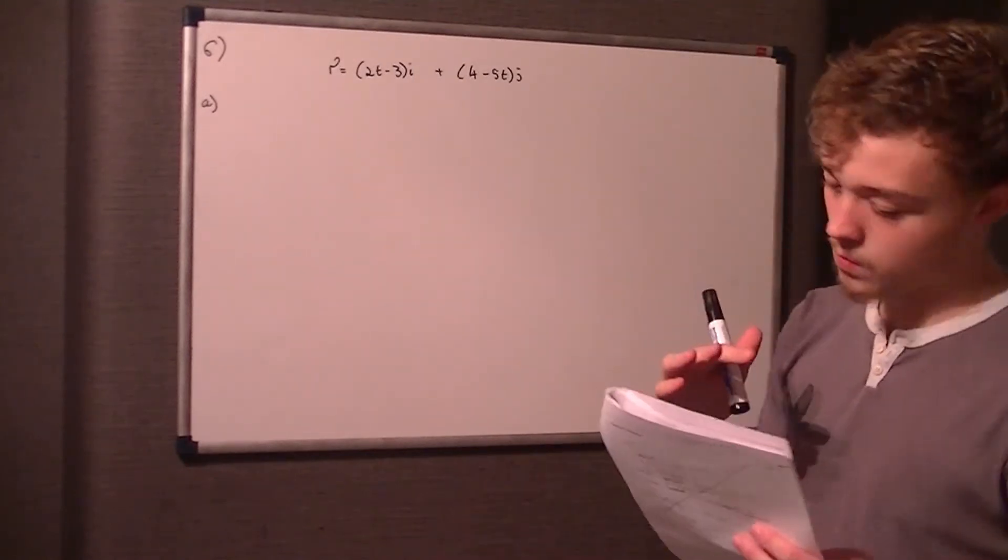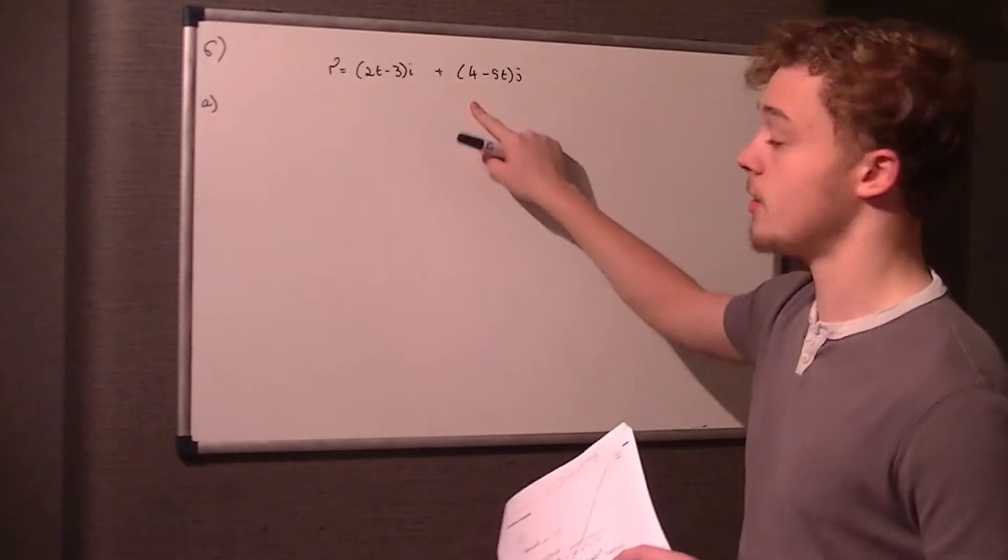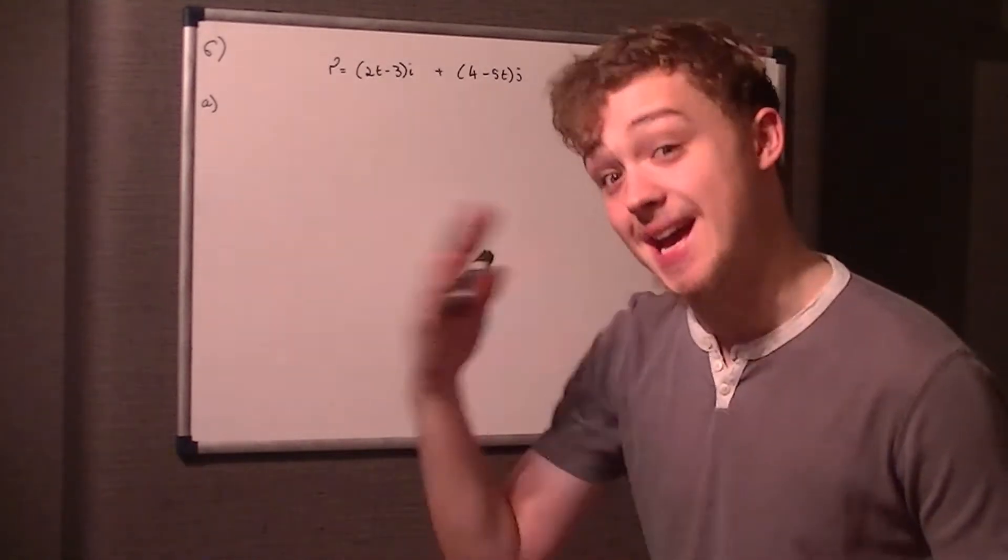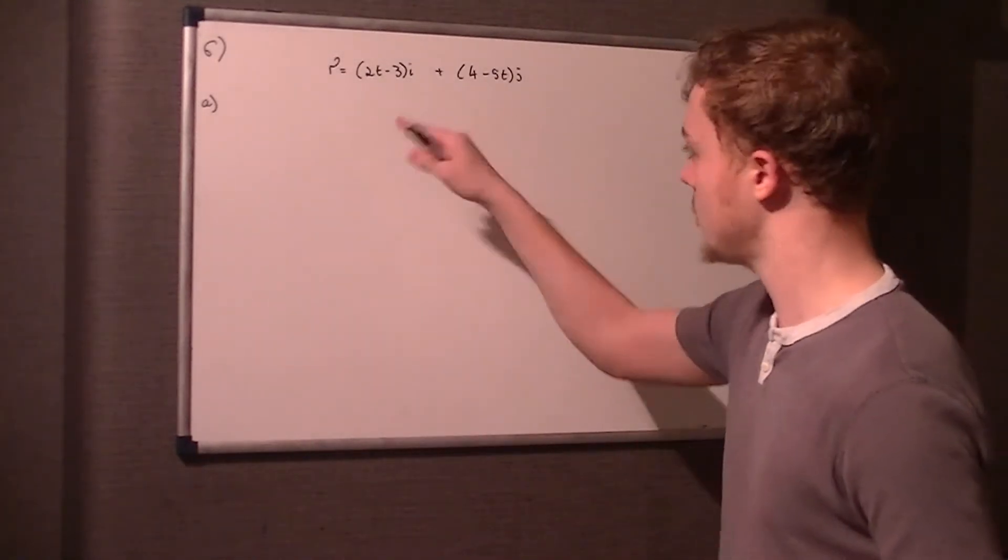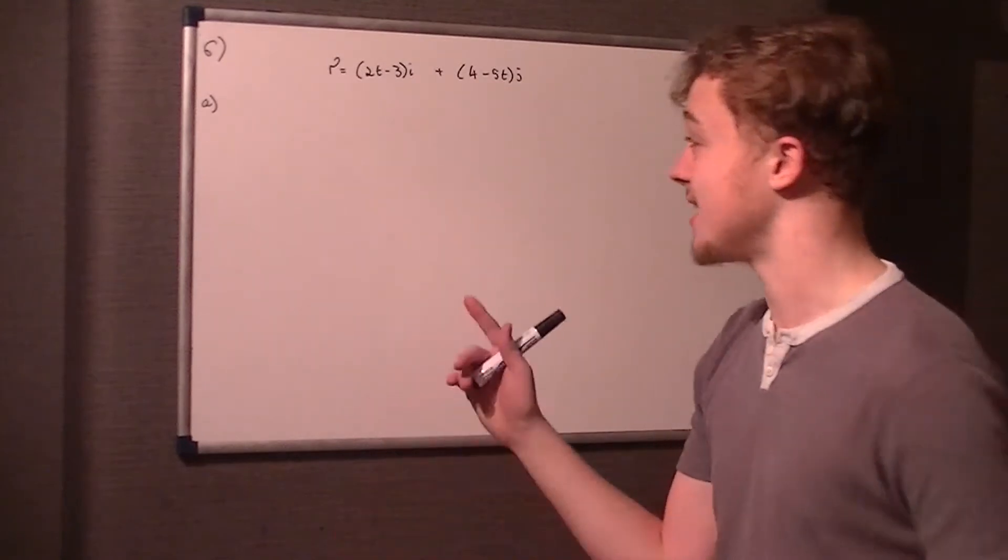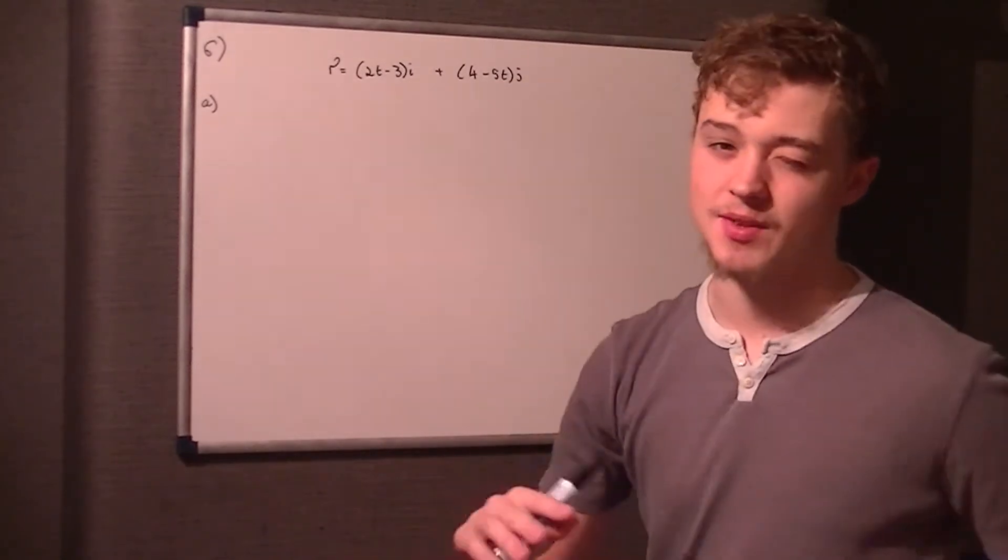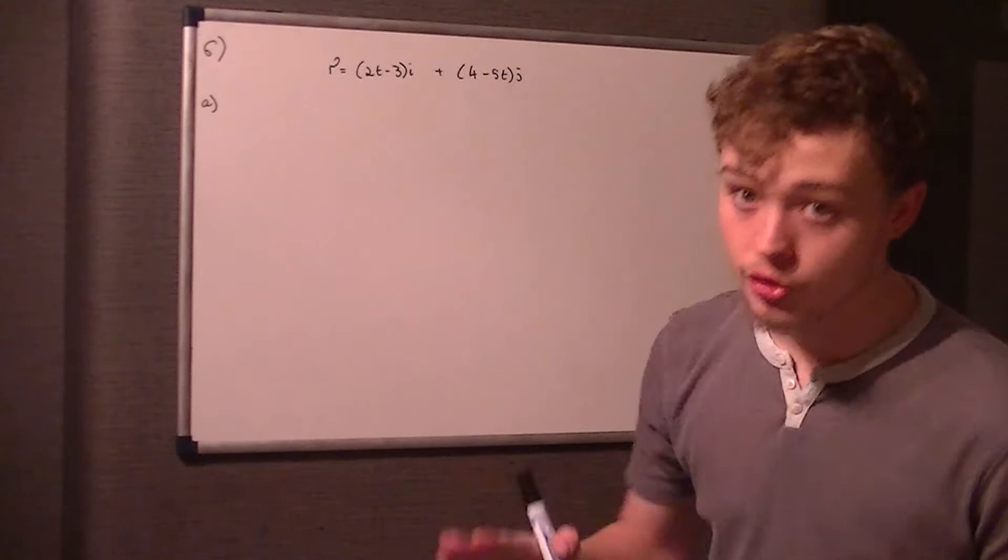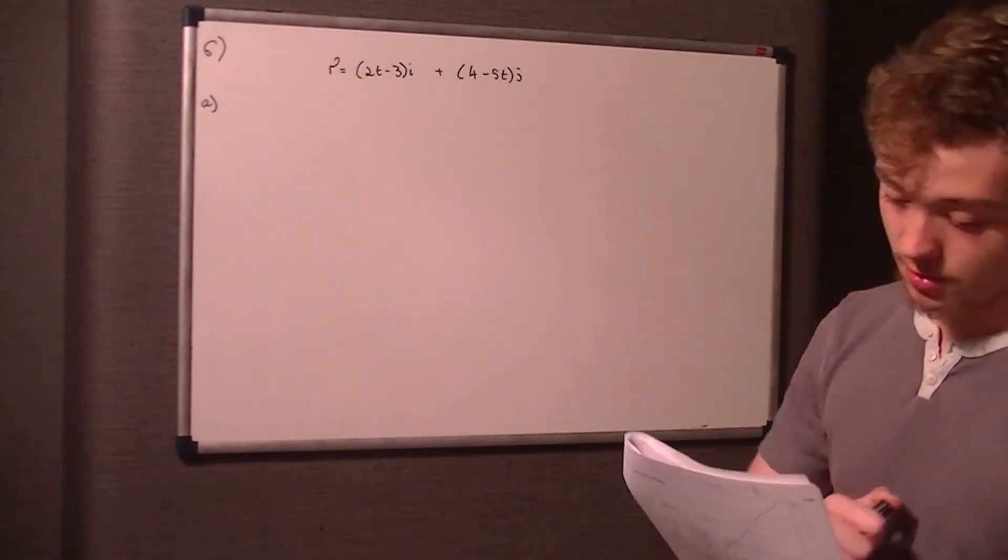The -3 and the 4 is the point to get to the line, and then the 2t in the i direction and the -5t in the j direction, that's the constant parallel vector, okay.